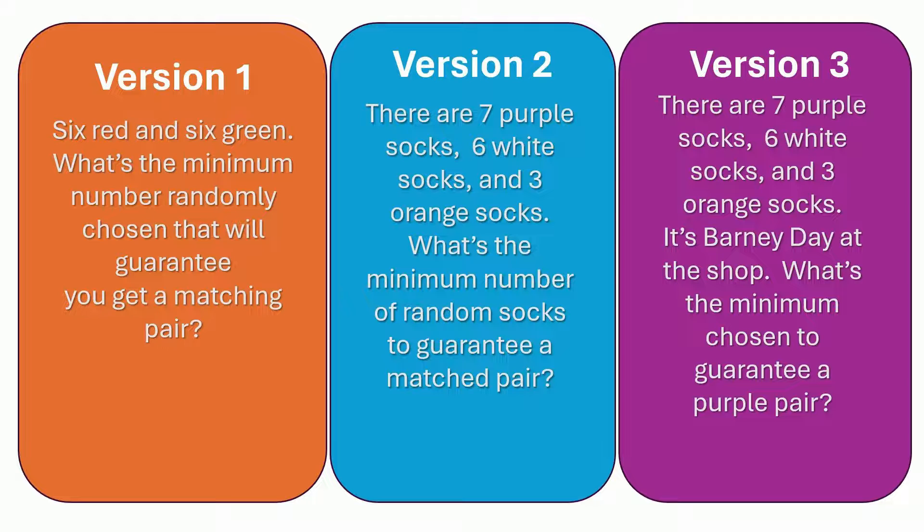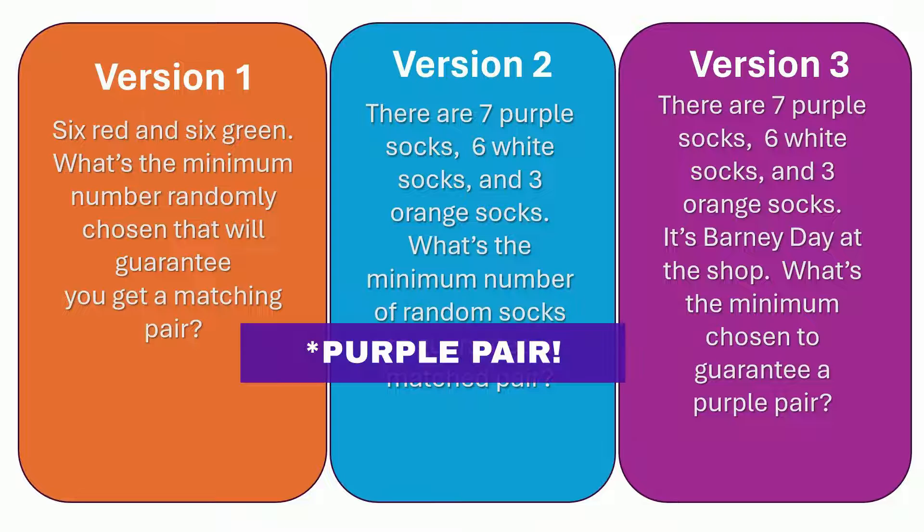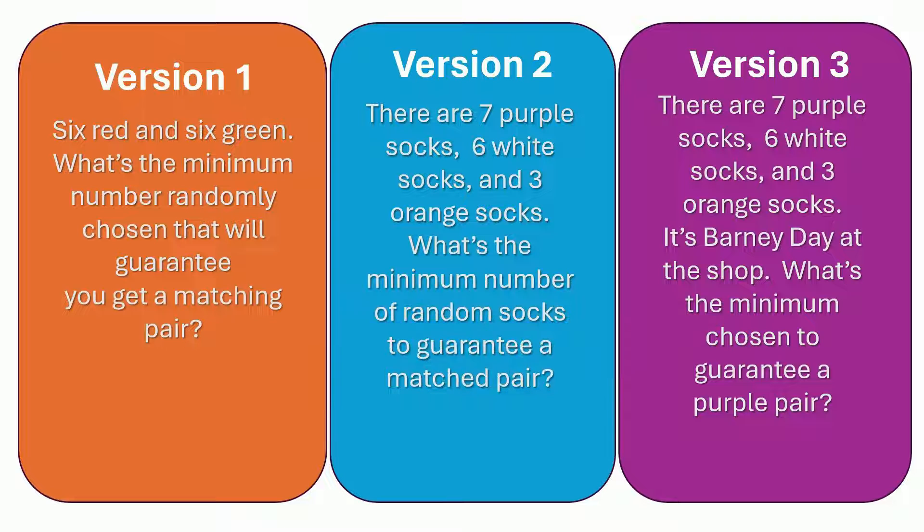Now, third situation, this is where it gets a little bit trickier. There are seven socks that are purple, there are six white socks and three orange socks. You got to grab a bunch of them. What's the minimum amount you can grab that would guarantee that within that amount you grab, there is a matched pair?